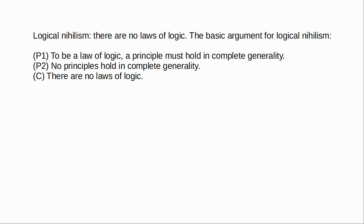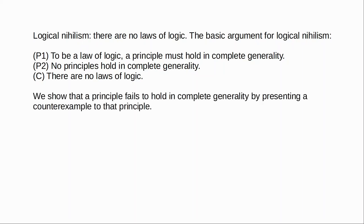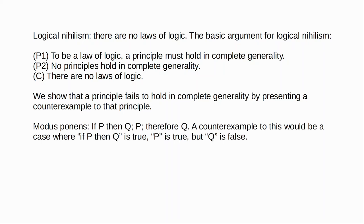The basic idea is: with respect to premise two, that no principles hold in complete generality, we show that a principle fails to hold in complete generality by presenting a counterexample to that principle. So if we take modus ponens — if P then Q, P therefore Q — we could give a counterexample by presenting a case where if P then Q is true, P is true, but Q is not true. That would show modus ponens fails to preserve truth in all circumstances.